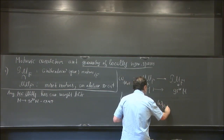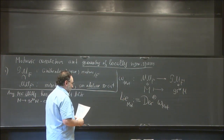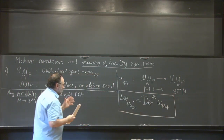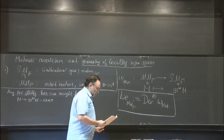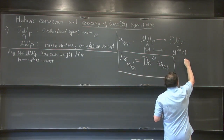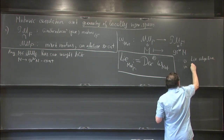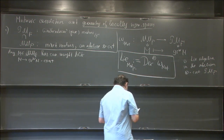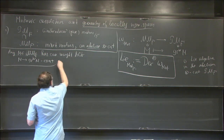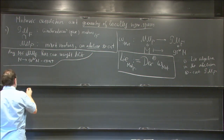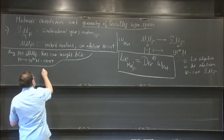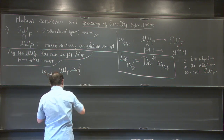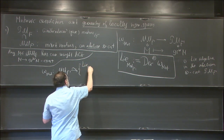Assuming any object has a canonical weight filtration, the map M → gr_W(M) is exact, so we have this fiber functor. We can now define: the motivic Lie algebra is by definition the Lie algebra of derivations of this fiber functor which act via the Leibniz rule and respect tensor products. Last time we did this in another mixed category — mixed Hodge structures — and that's how we got the Hodge Galois group.